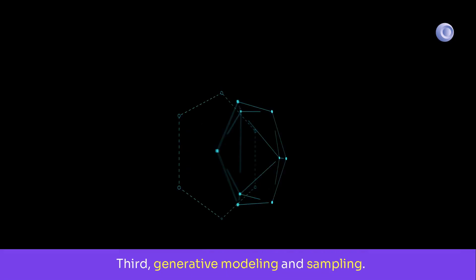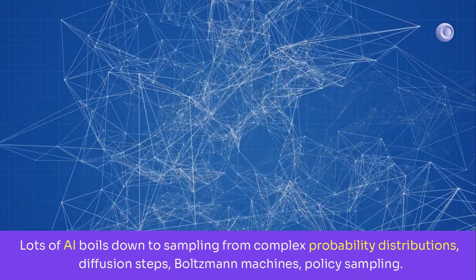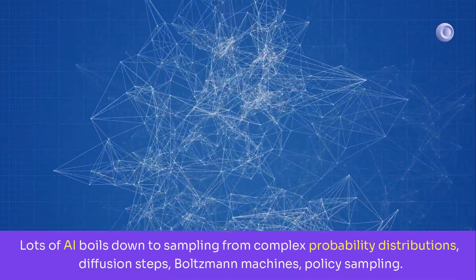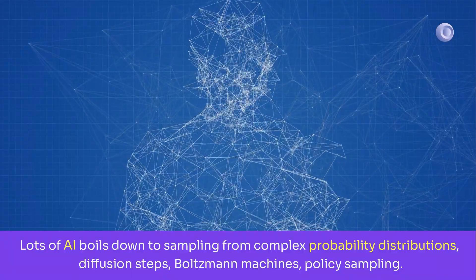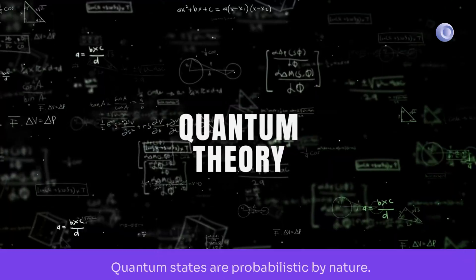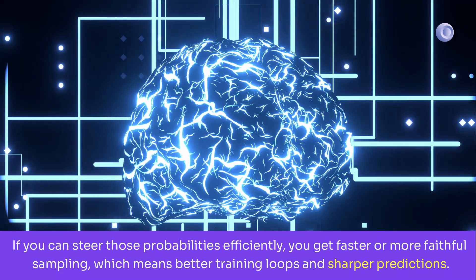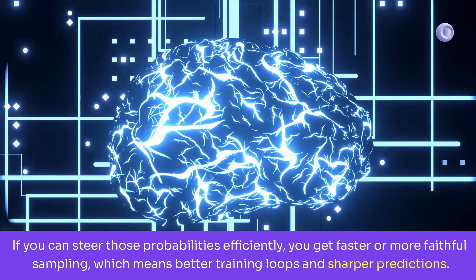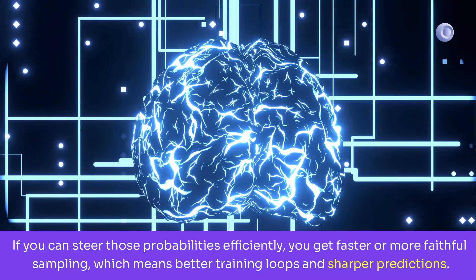Third, generative modeling and sampling. Lots of AI boils down to sampling from complex probability distributions, diffusion steps, Boltzmann machines, policy sampling. Quantum states are probabilistic by nature. If you can steer those probabilities efficiently, you get faster or more faithful sampling, which means better training loops and sharper predictions.